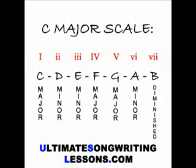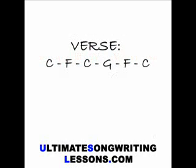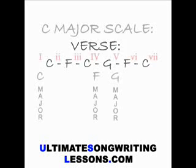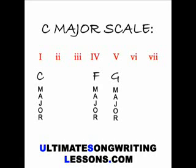Now let's look again at the chords used in the verse of 'Can't Buy Me Love.' We have the following: C, F, C again, G, F, and once more back to C. When we look back at our harmonised major scale, we see they've exclusively used the I, IV, and V chords — or C, F, and G.